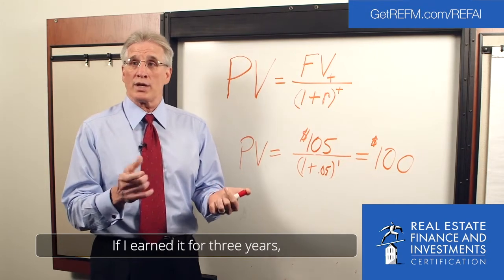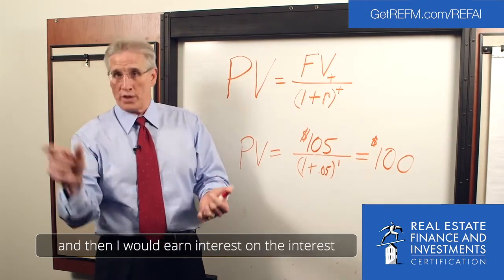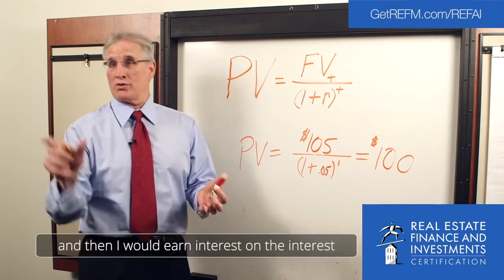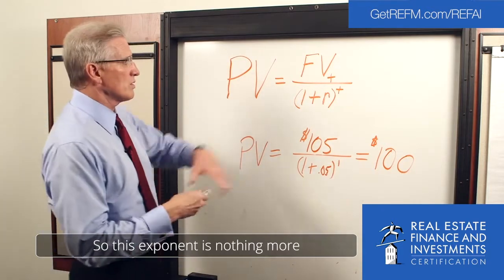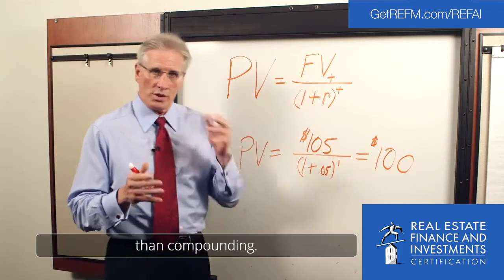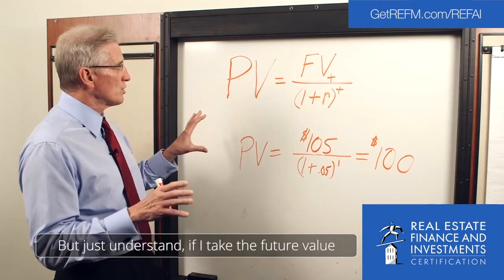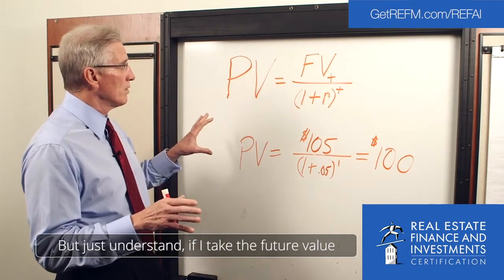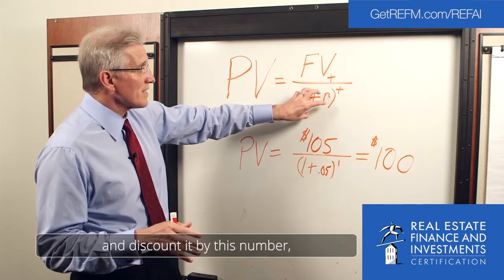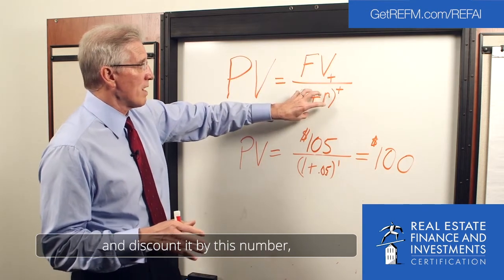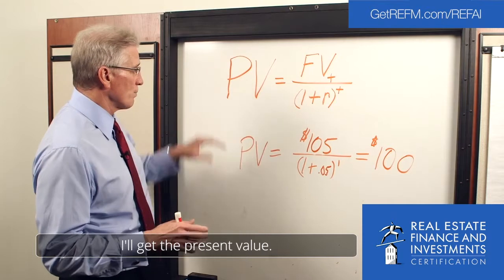If I earned it for three years, I earned interest the first year, and then I would have earned interest on the interest for the second year, and interest on the interest for the third. So this exponent is nothing more than compounding. If I take the future value and discount it — divide it by this number — I'll get the present value.